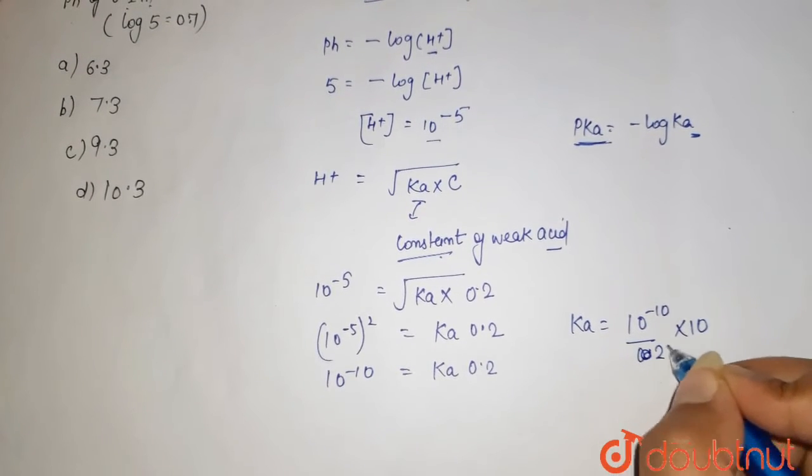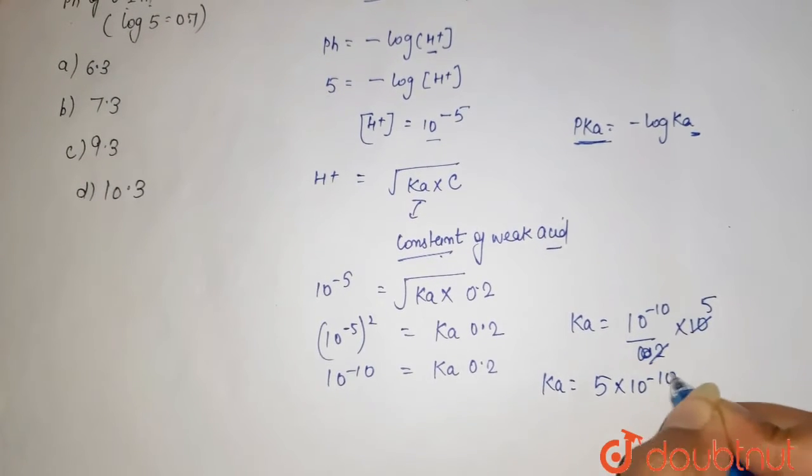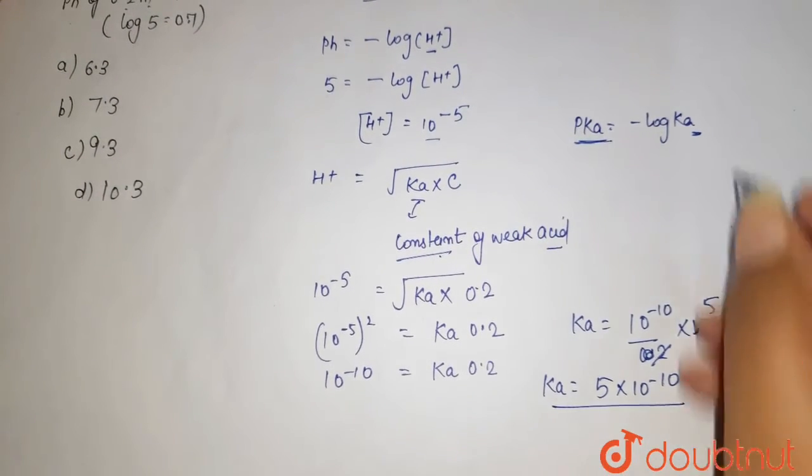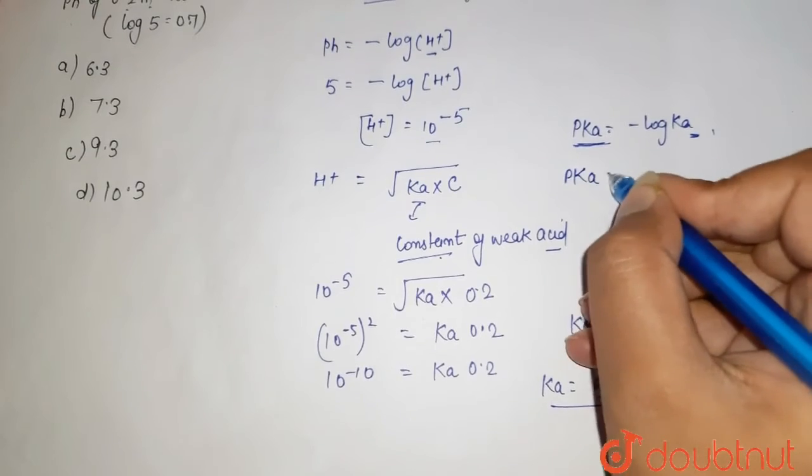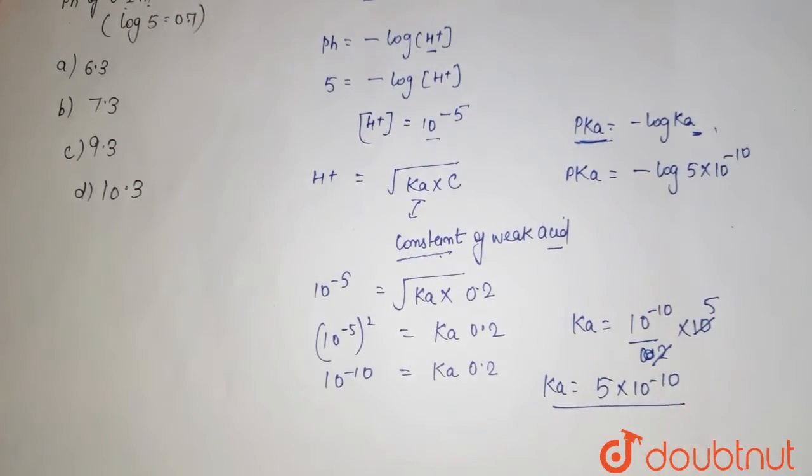So your Ka comes out to be 5 into 10 to the power minus 10. Now we will put this over here. It is your pKa minus log 5 into 10 to the power minus 10.